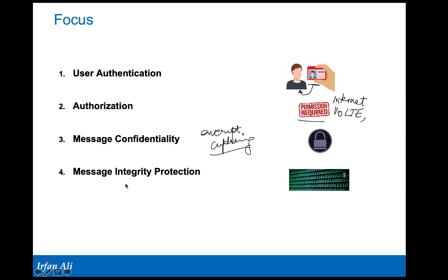Another aspect of security we will cover is message integrity protection. The main concept is that it should not be possible for an adversary to change the information being sent — such as changing a one to a zero — and go unnoticed. If any change is made, the receiving party should know. For example, if a message says 'send me $100'...